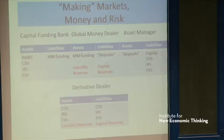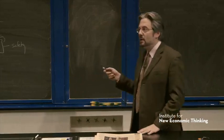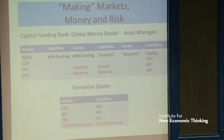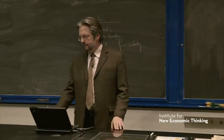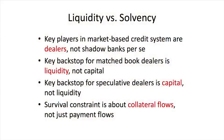To the extent that they are a match book dealer, they don't really need capital but they do need liquidity. Liquidity reserves are important for the match book part of the system. But if you are a speculative dealer, you need to be able to absorb losses, and that means capital. So capital reserves are important for the speculative dealer — the proprietary dealer part — and this is true for the derivative dealer as well as the money market dealer.